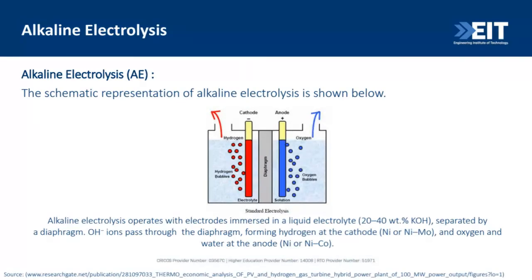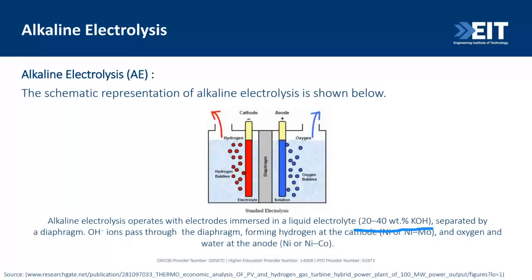In alkaline electrolysis, the name comes from the electrolyte used: a potassium hydroxide (KOH) solution at 20–40 weight percent, in liquid form. The schematic shows two electrodes — cathode and anode — separated by a diaphragm. Hydrogen comes out from the cathode side, and oxygen and water come out from the anode side. The cathode is normally made of nickel or nickel molybdenum.